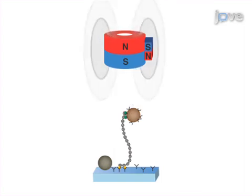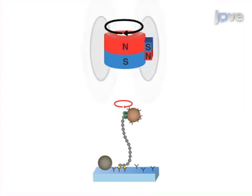With this magnet configuration, external torques can be applied to the tethered DNA molecule through simple rotation of the magnet assembly.